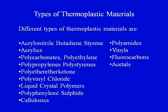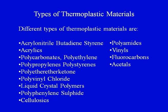There is a large family of thermoplastic materials. Different types include acrylonitrile butadiene styrene (ABS), acrylics, polycarbonates, polypropylenes, polyvinyl chloride (PVC), liquid crystal polymers, cellulosics, polyamides, vinyls, fluorocarbons, and acetals. These materials can further be blended to create an even wider range of thermoplastic materials, all of which can be converted into various types of tangible products.